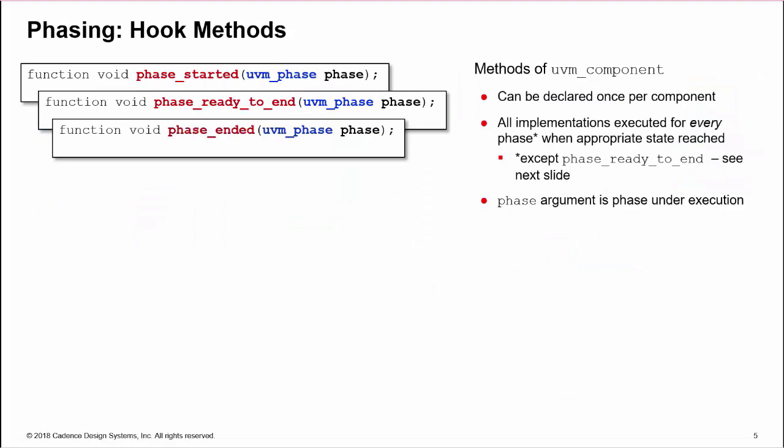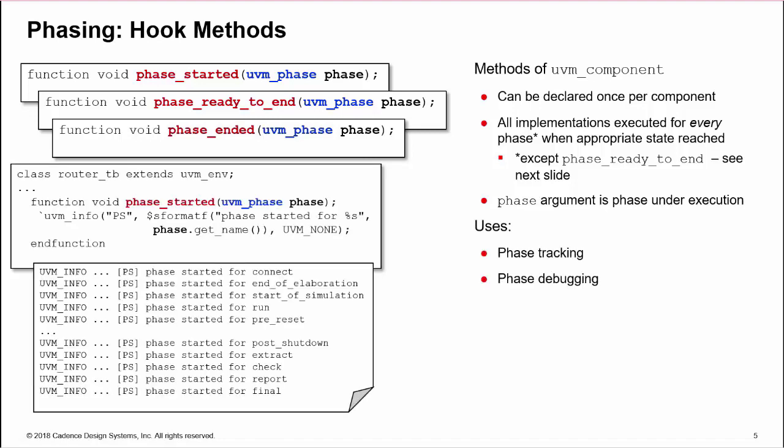Let's look at the hook methods first. These are methods of uvm_component and can be declared once per class. Phase_started and phase_ended are executed automatically when every phase enters the appropriate state. Phase_ready_to_end is only really applicable to run phases and sub-phases, as we shall see. All three are void functions with a single phase argument, which is the phase under execution. The first phase_started example here reports the phase argument using get_name. So, this tracks when each phase is started for debug.